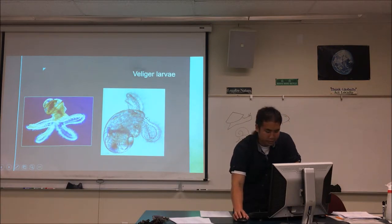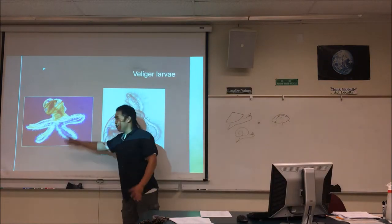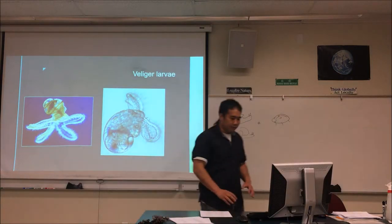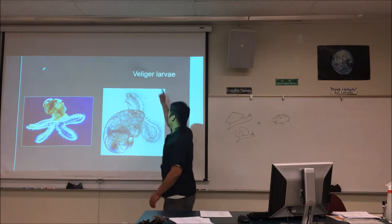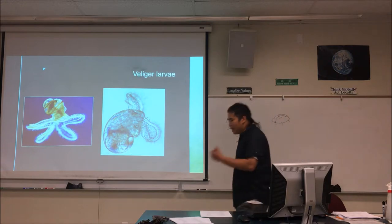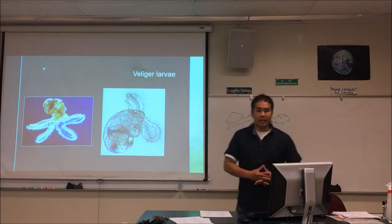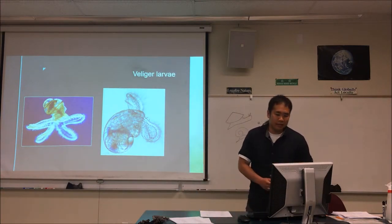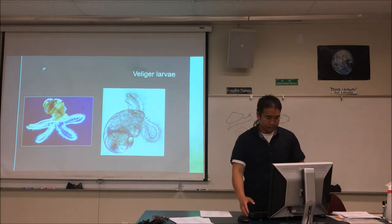Looking at a baby snail: it already has a little shell starting to grow, and what looks like multiple appendages is actually the foot — which will later coalesce into a single foot. The larval snail is called a veliger. Veliger larvae are what mollusks have — snail larvae, clam larvae, and oyster larvae are all called velgers.